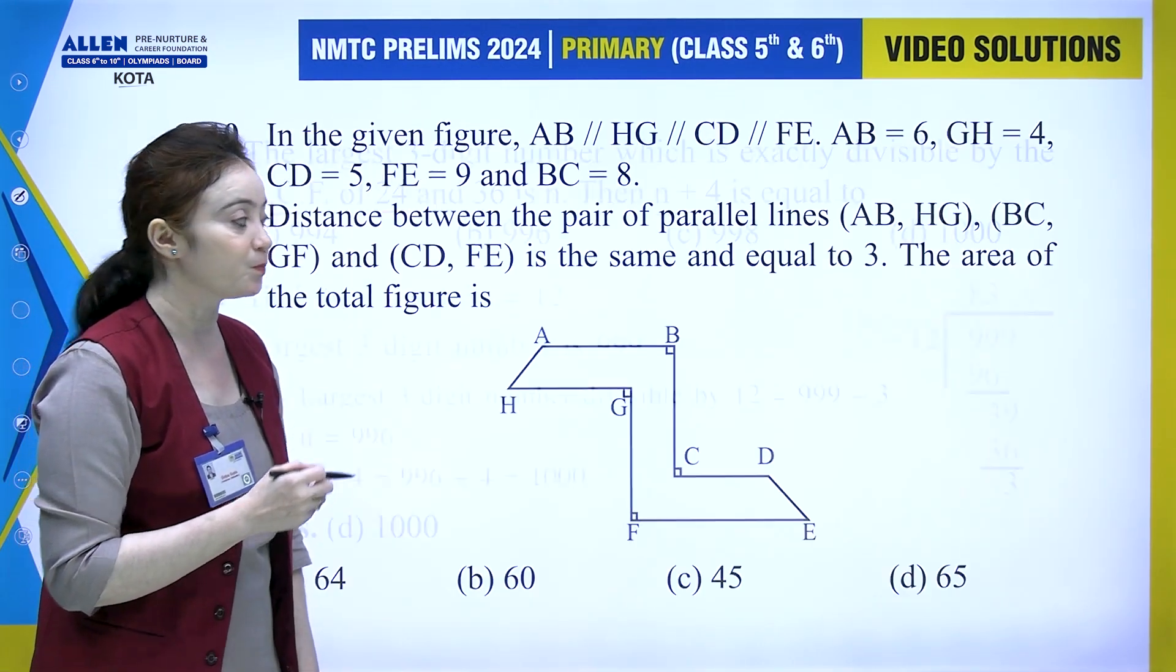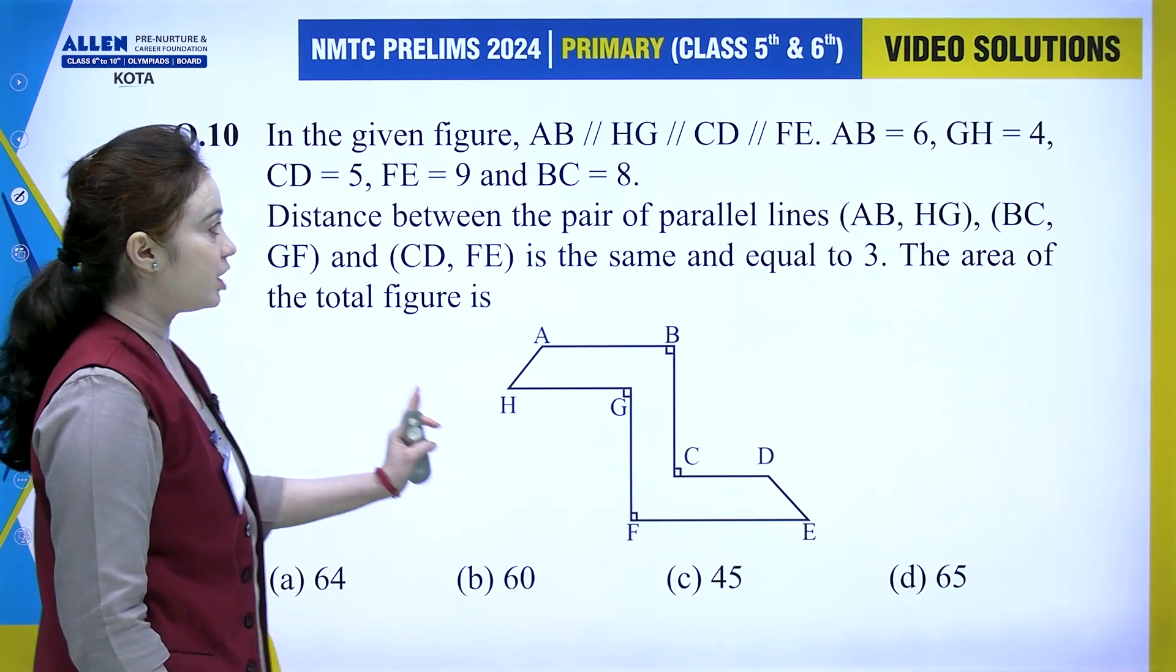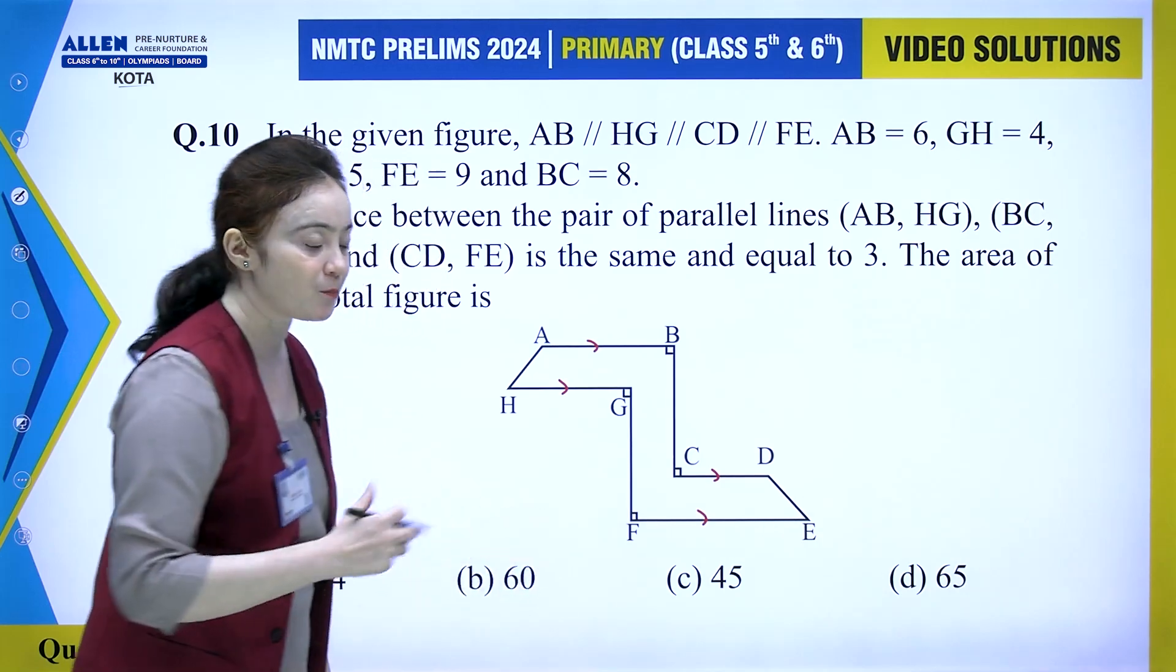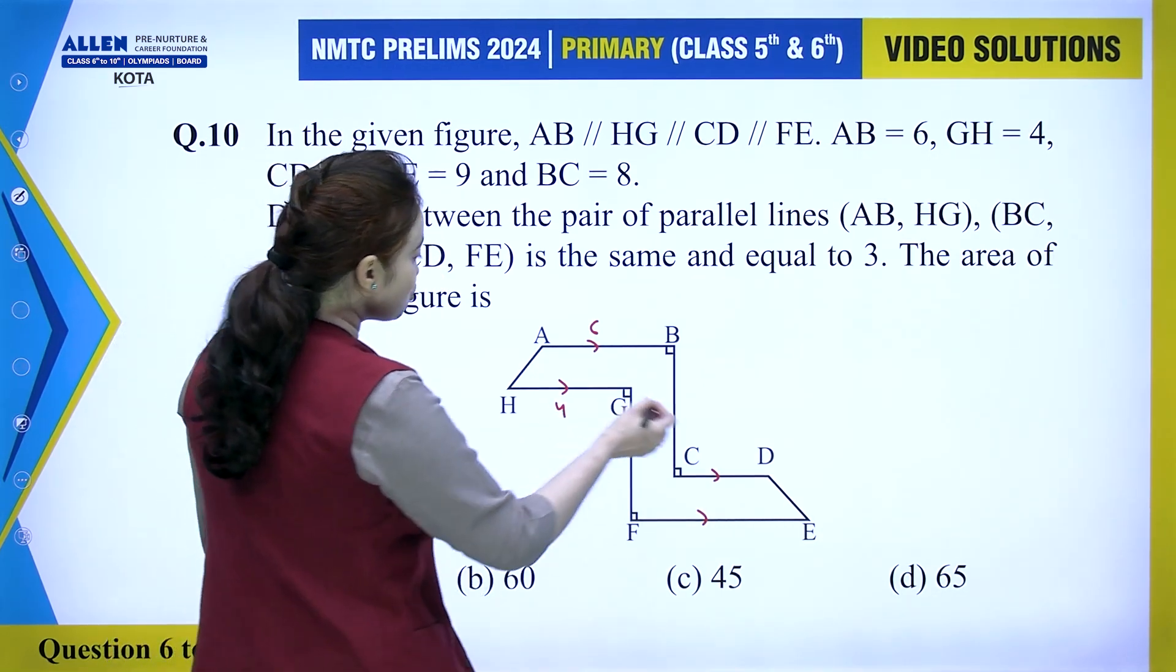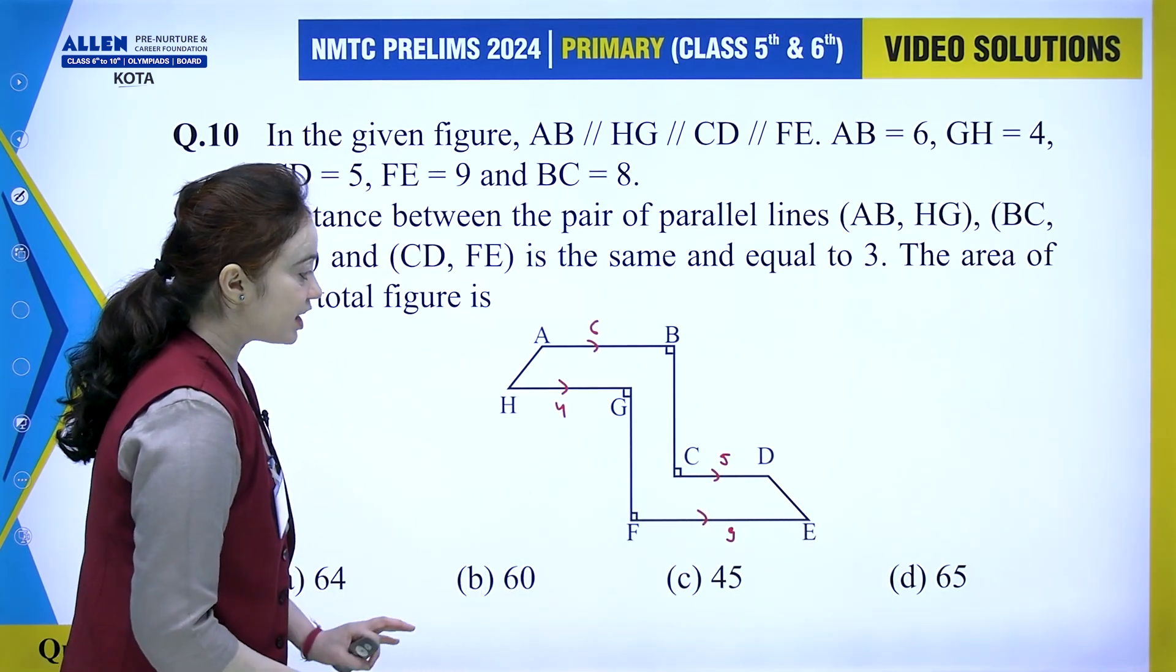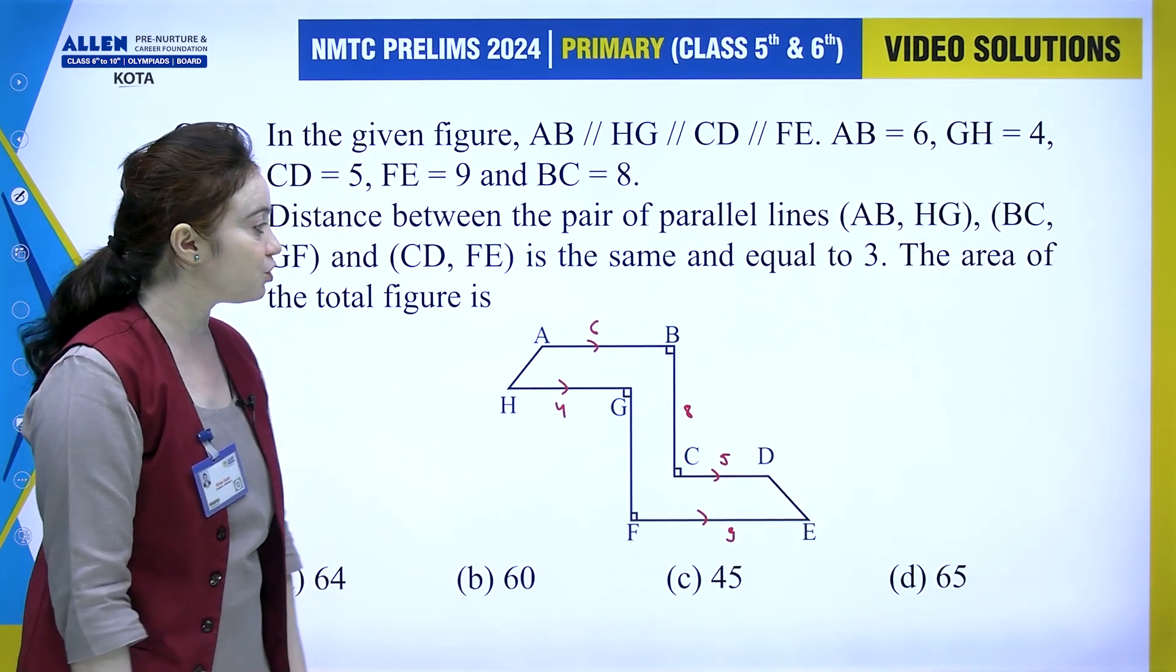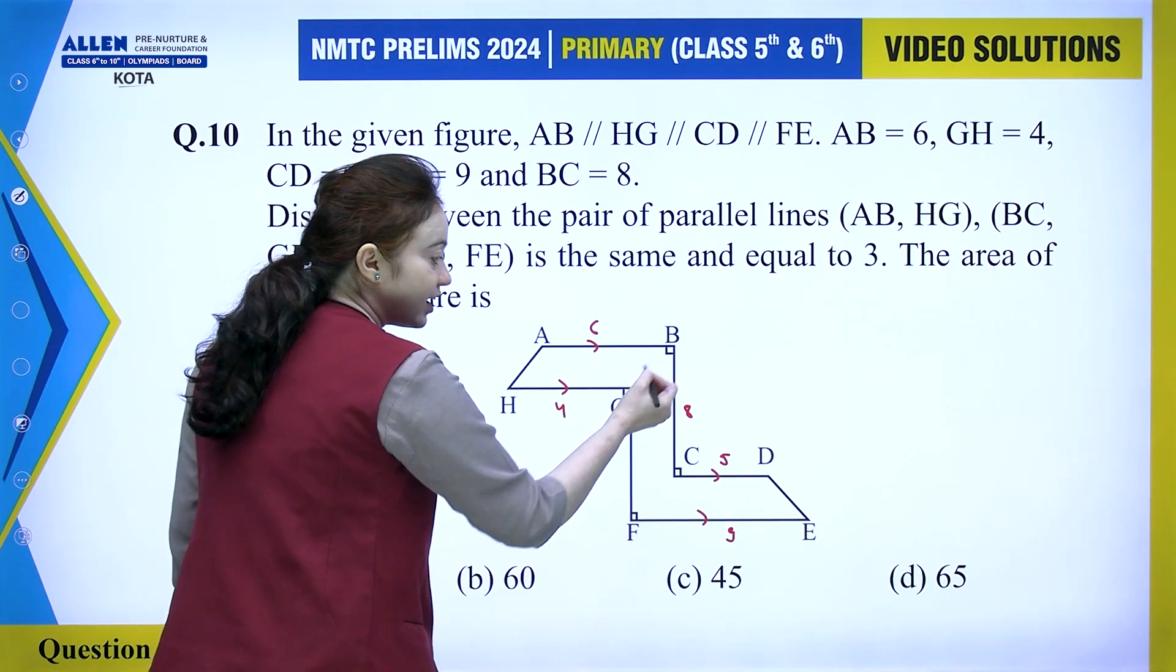Moving to question 10: In the given figure, AB is parallel to HG, which is parallel to CD, which is parallel to EF. AB length is 6 units, GH is 4 units, CD is 5 units, EF is 9 units, and BC is 8 units. The distance between each pair of parallel lines is equal to 3 units. Since these two lines are parallel and this angle is 90 degrees, these two lines will also be parallel.